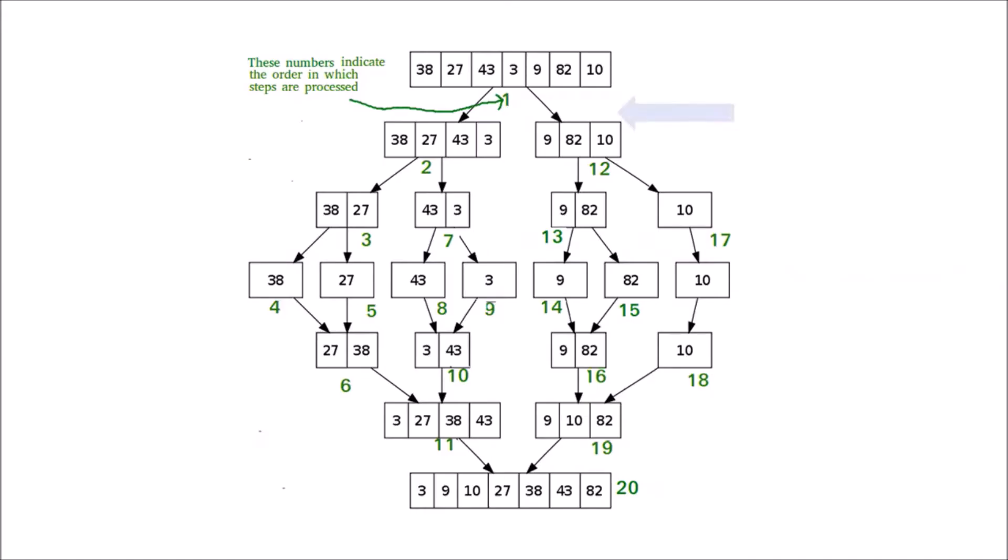So how merge sort works is it takes an array and halves it until you're left with just the elements. Then it groups these elements in order until you have your final ordered array.